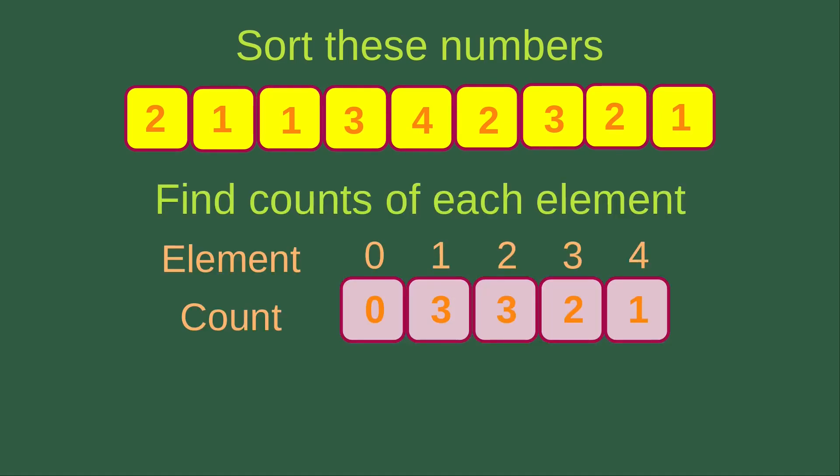In order to do the counting sort process, I need to find out the number of counts for each element. So for element 0, which is non-existent in the numbers to be sorted, the count must be 0. And for element number 1, we see that we have 1, 2 and 3 elements, so this value is 3.